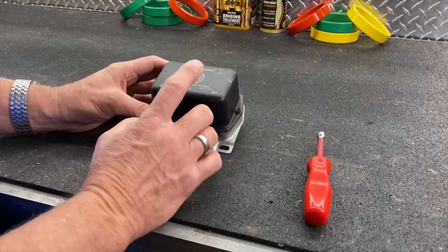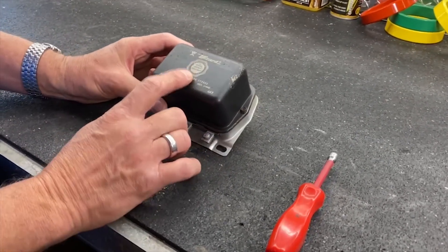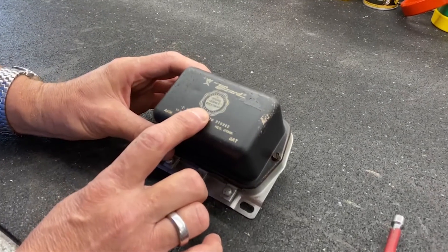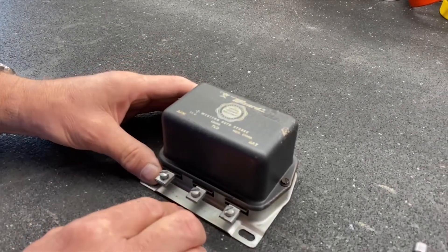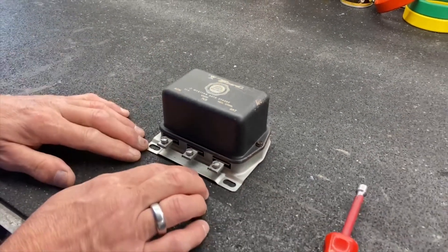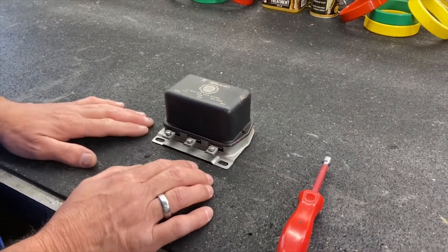So this voltage regulator is an original equipment replacement for a mid to late 60s Ford product, 12 volt negative ground. That's critical that we know that, 12 volt negative ground.